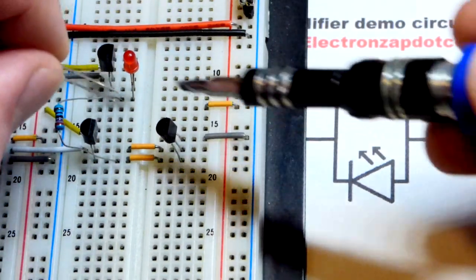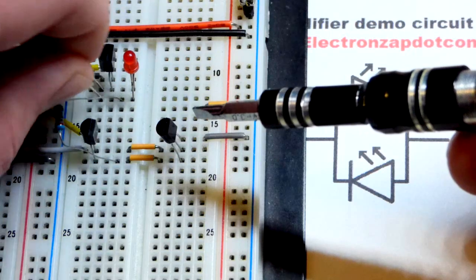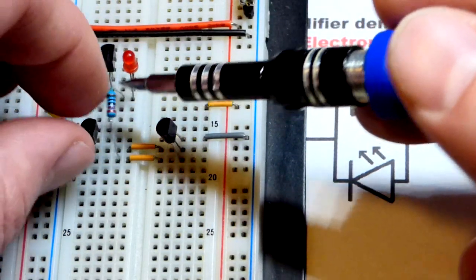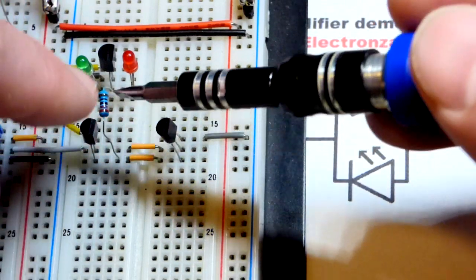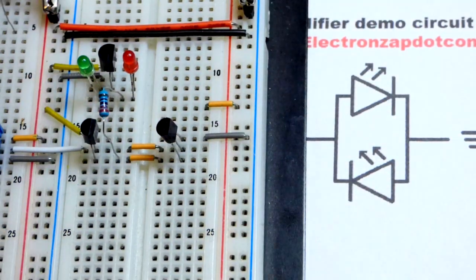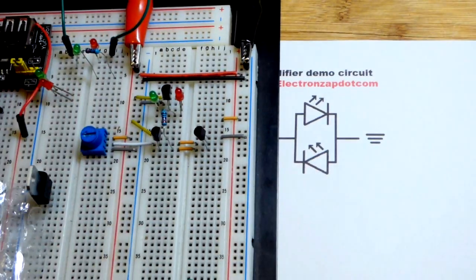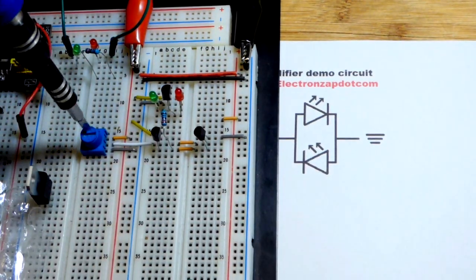And so that will light up when our output here is more positive than our virtual ground or zero volt reference point. The green LED is wired the other way. The long lead is to our virtual ground, short lead is to the resistor. Long lead anode, short lead cathode. So it will light up when this is more negative than our virtual ground by enough volts. And we already saw that it works.